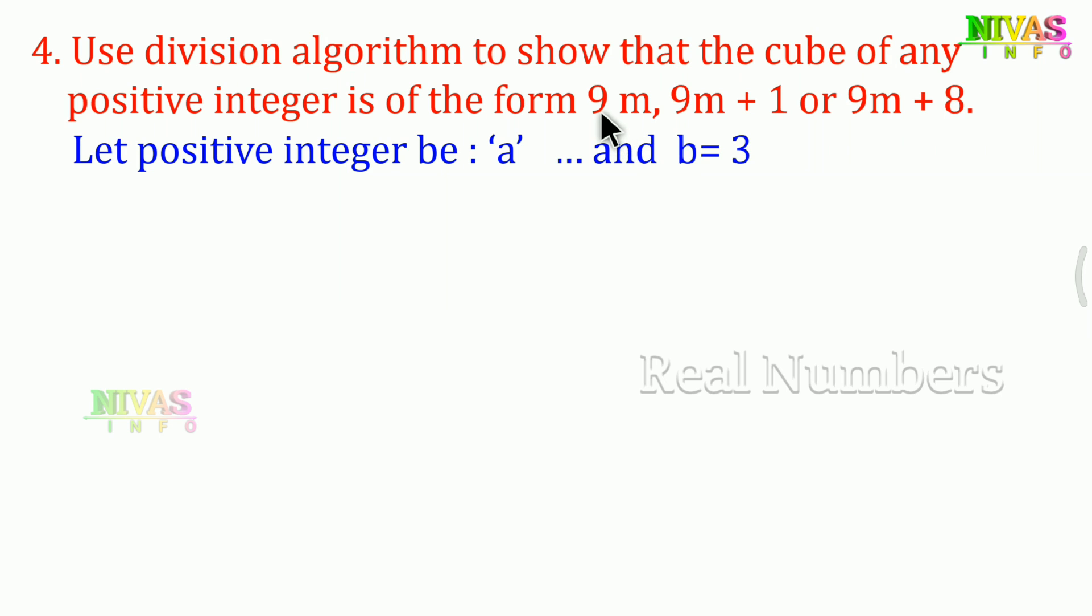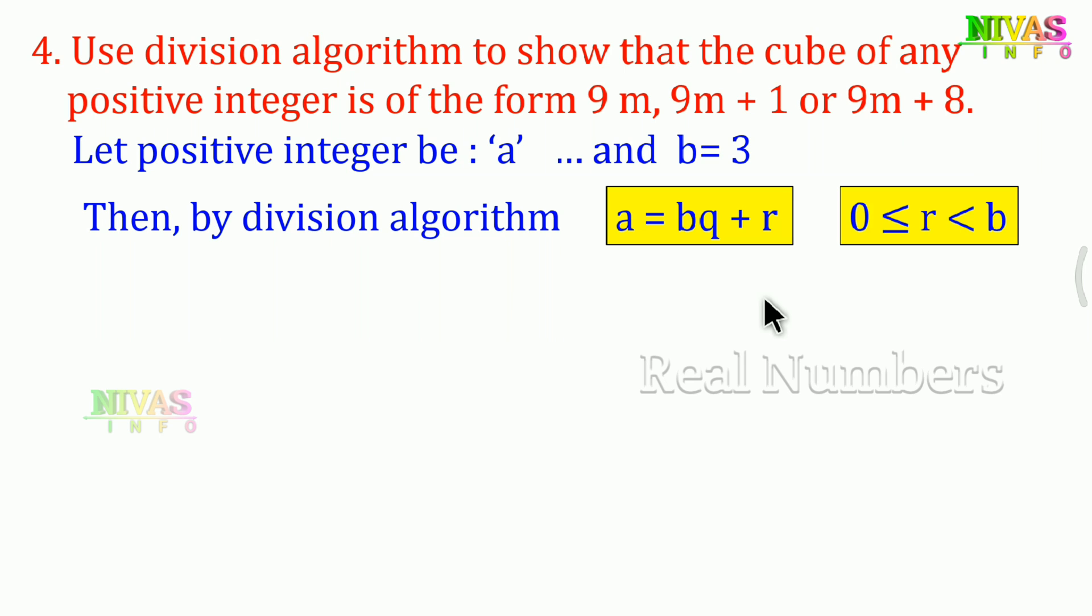To prove this using 9, we need to show it's divisible by 3 first. We'll apply the division algorithm with a and b=3. The equation we use is: a = bq + r, where the condition is 0 ≤ r < b.